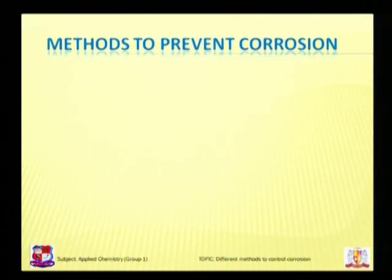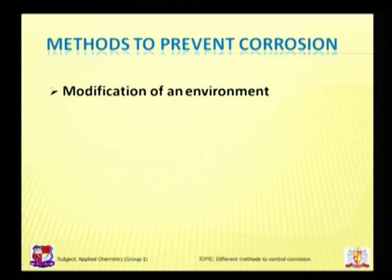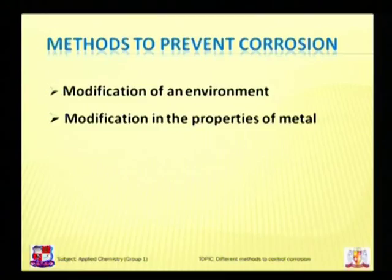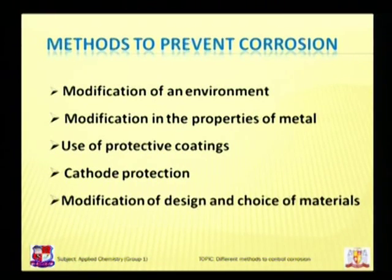Let us see what are the different preventive measures to control corrosion. As we know, corrosion involves reaction of metallic material with its environment and it is a natural process. Metal corrosion can be managed, slowed, or even stopped to some extent by using proper techniques. The different methods to prevent corrosion are: first, modification of environment; second, modification of the properties of metal; third, use of protective coatings; fourth, cathodic protection; and fifth, modification of design and choice of material.